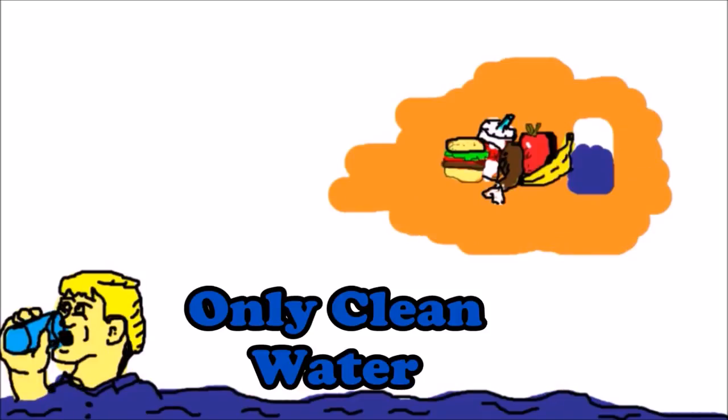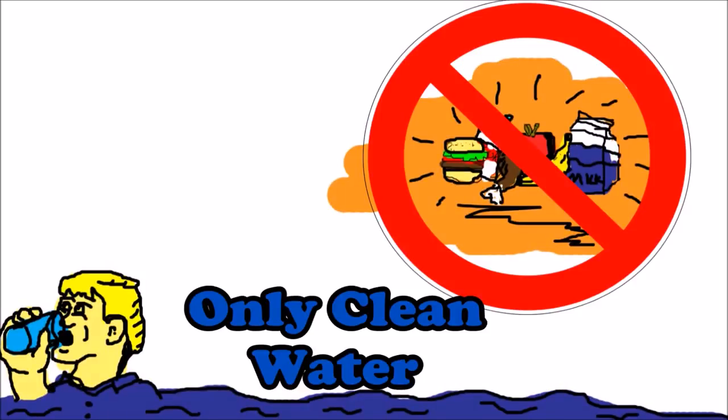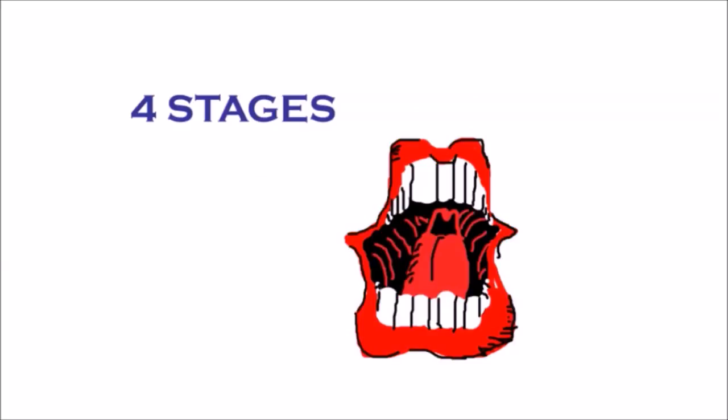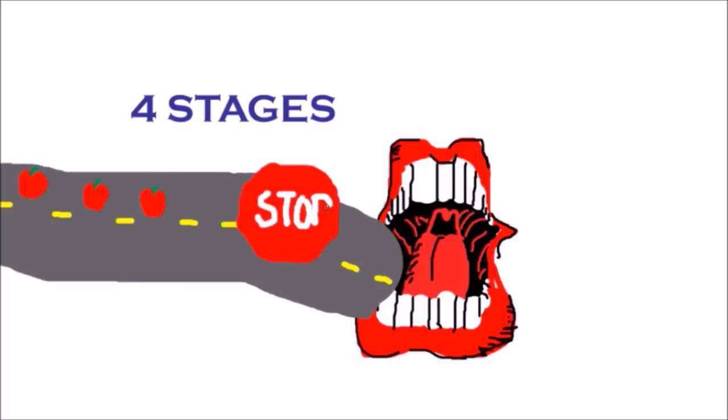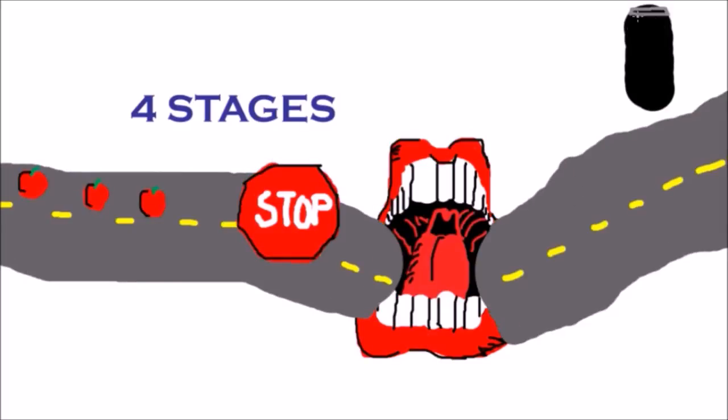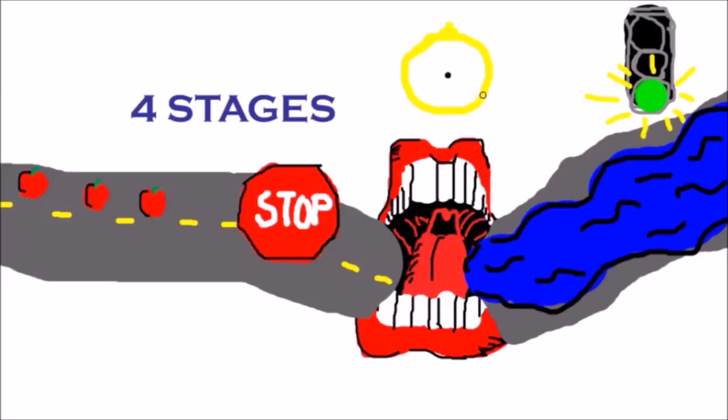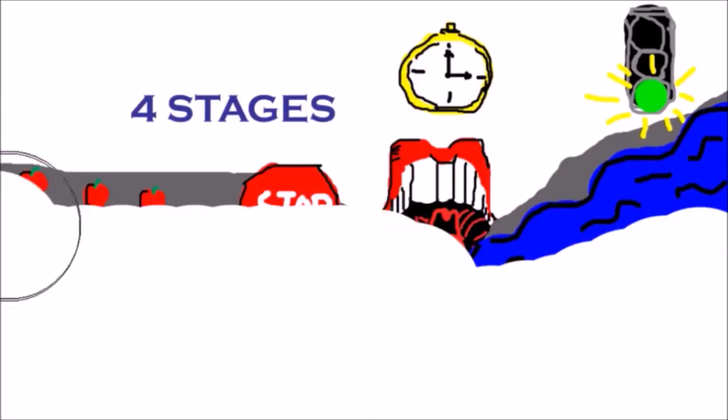Water fasting consists of drinking only clean water and not eating any foods. There are four stages the body goes through when you eat no foods and only drink purified water. Of course, this depends on how long you are going to fast for.